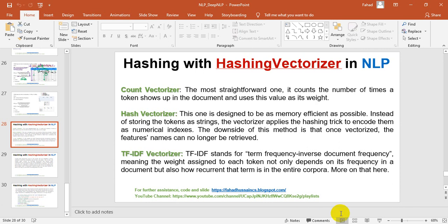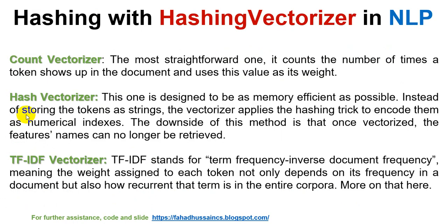First, let's talk about basic definitions of topics we have already covered, like Count Vectorizer, TF-IDF, and topics related to data cleaning. The Count Vectorizer is the most straightforward one — it counts the number of times a token shows up in a document and uses this value as its weight, showing the total count and, according to the weights, which tokens are important.